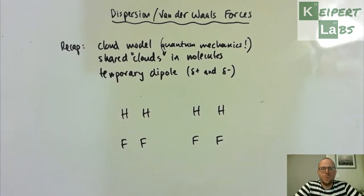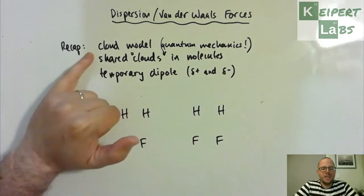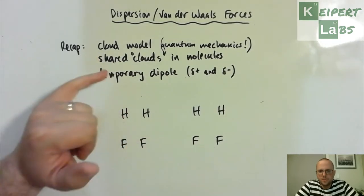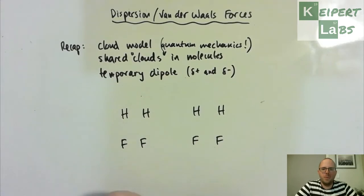We're going to start with a quick recap from our previous video. Reminding ourselves that we're dealing with the cloud model, the cloud atomic model, the upgrade from Bohr's atomic model which showed electrons in very defined orbits.